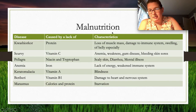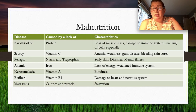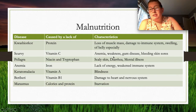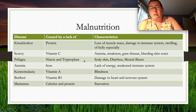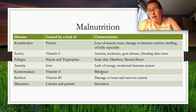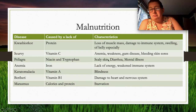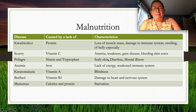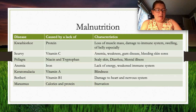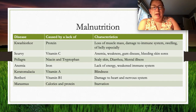Scurvy — vitamin C deficiency — is often associated with pirates on long sea voyages. Its symptoms include weakness, gum disease, bleeding, and skin sores. Pellagra involves niacin and tryptophan deficiency causing scaly skin, diarrhea, and mental illness. Anemia is a lack of iron causing low energy and a weakened immune system. Vitamin A deficiency can lead to blindness, and vitamin B1 deficiency causes damage to the heart and nervous system.